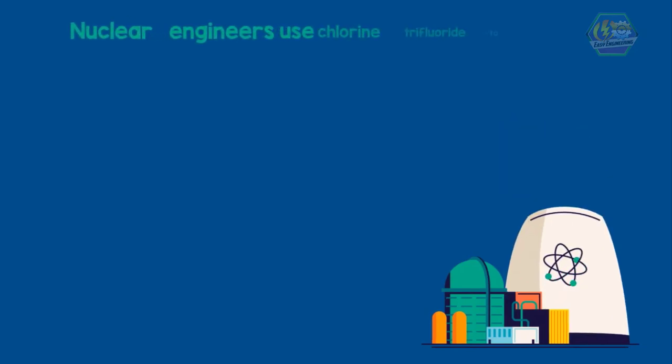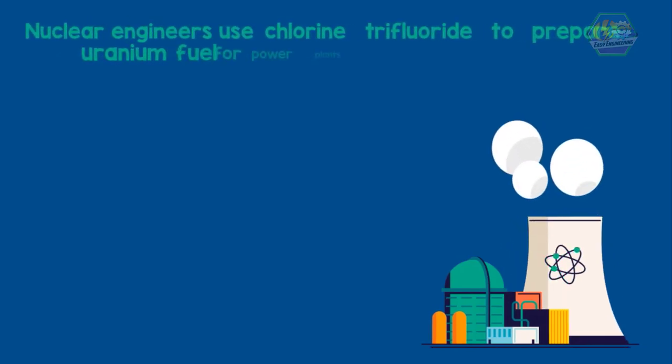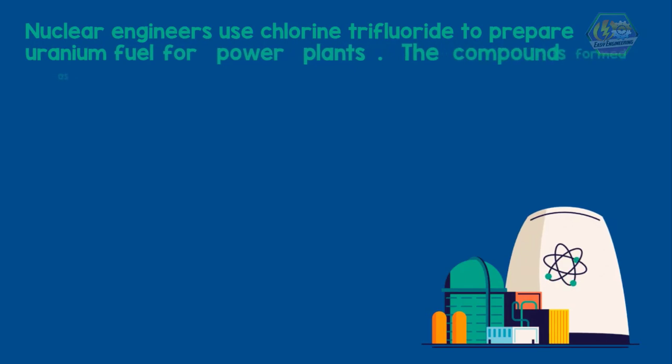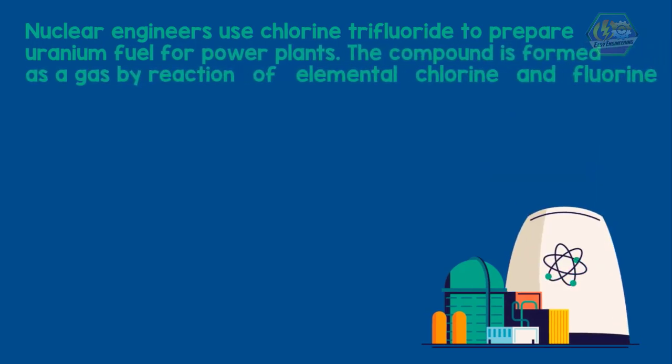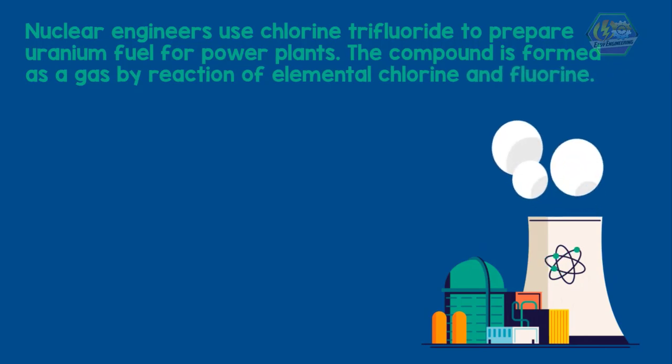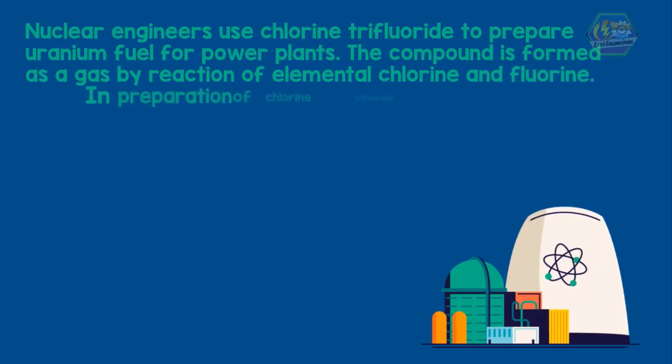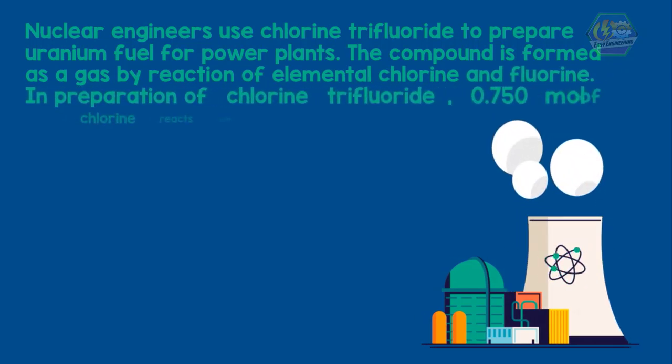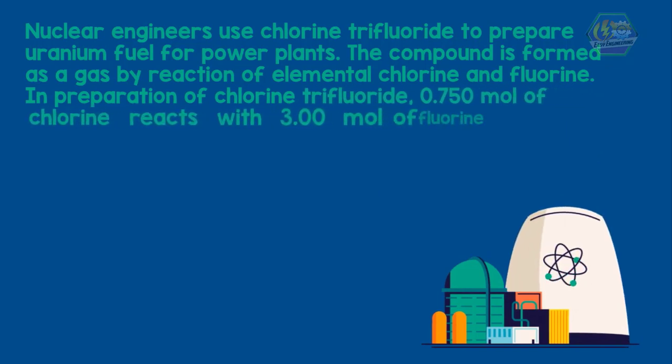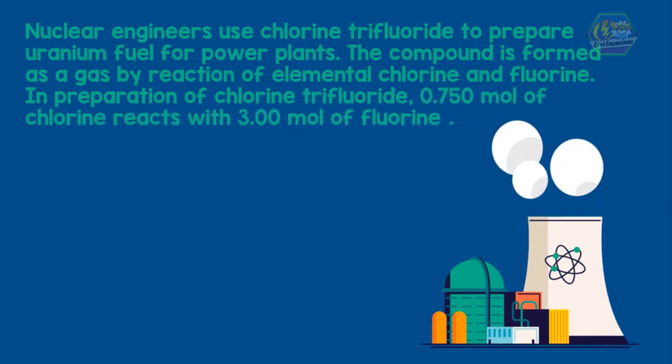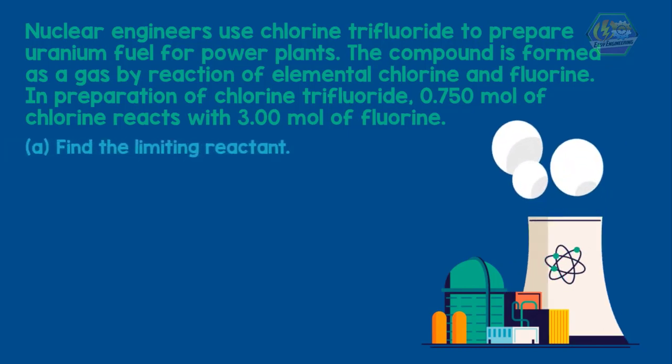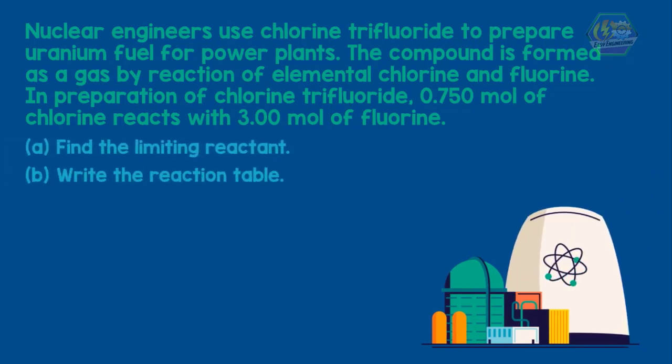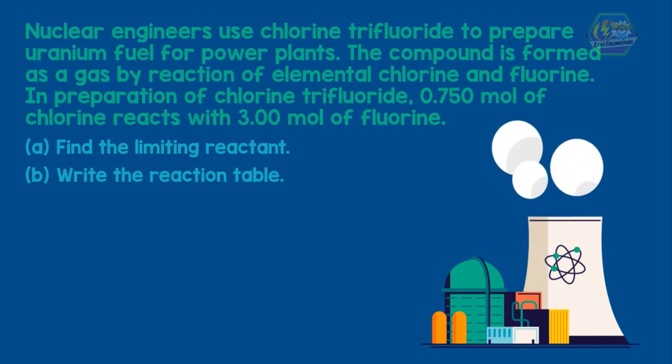Nuclear engineers use chlorine trifluoride to prepare uranium fuel for power plants. The compound is formed as a gas by reaction of elemental chlorine and fluorine. In preparation of chlorine trifluoride, 0.750 mole of chlorine reacts with 3.00 mole of fluorine. (a) Find the limiting reactant and (b) Write the reaction table.